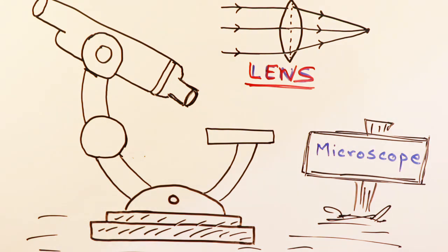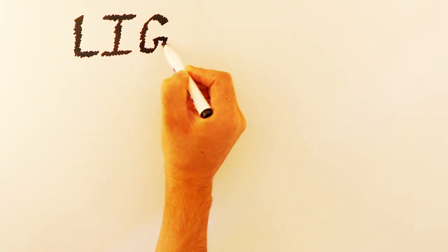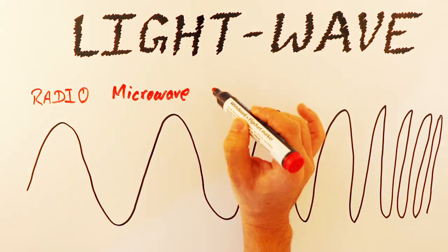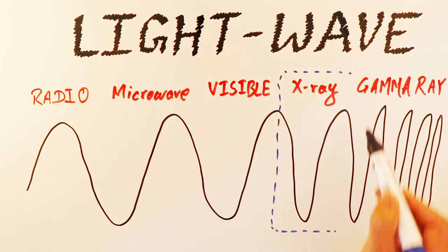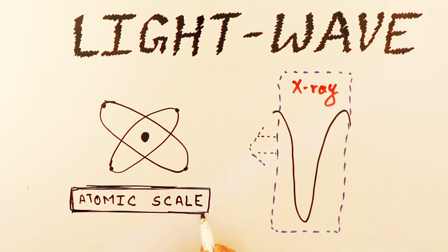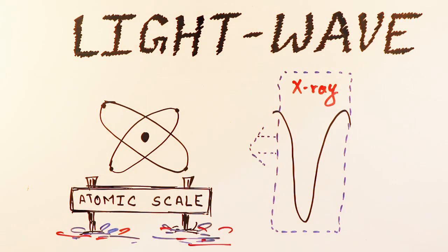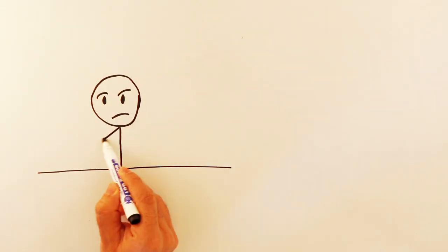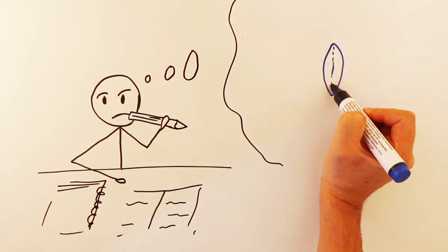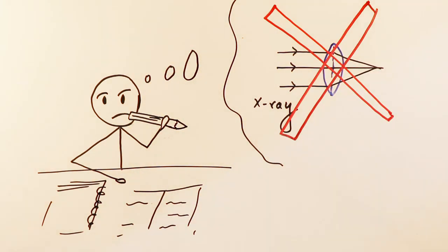What if you want to see something very small, smaller than the wavelength of visible light? Well, you will simply choose the light with a smaller wavelength and that is X-ray. X-ray has a wavelength about the size of an atom, unlike the visible wave. But the problem is there are no lenses to focus the X-rays. Now, what do you do? Even though you have X-ray, but you cannot focus it and create an image.